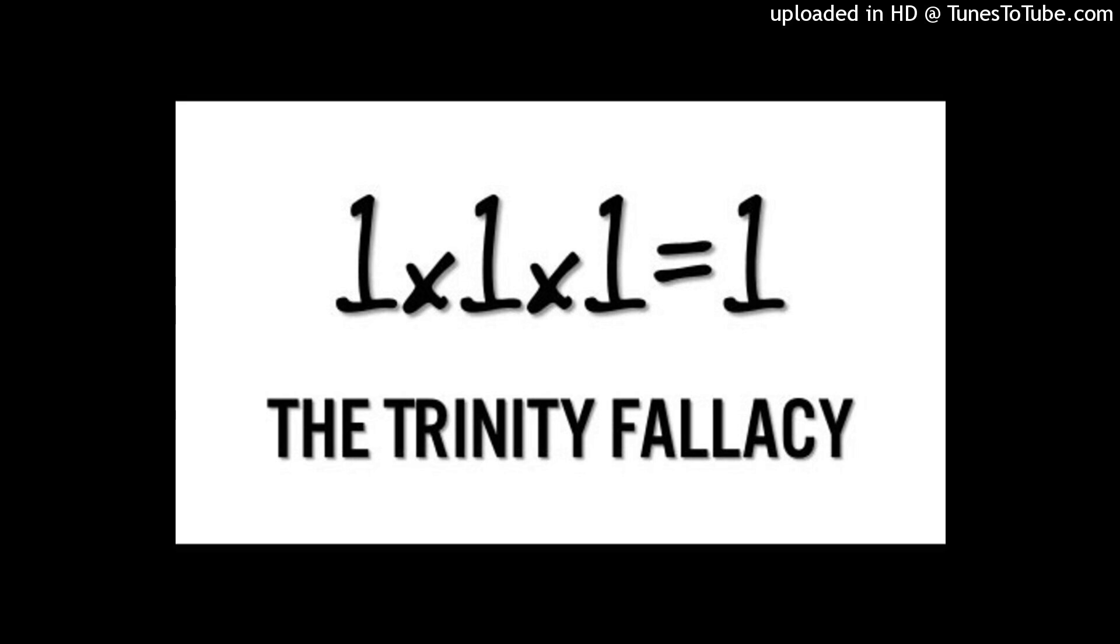The number one represents unity, singularity, and indivisibility, while the number two represents duality or separation. To claim that the Trinity is a number that is less than two, yet more than two, is inherently contradictory. No such number exists in mathematics. This fundamental discrepancy calls into question the logical foundation of the Trinity.